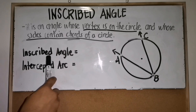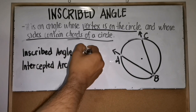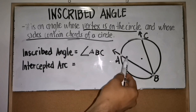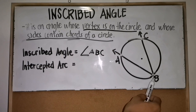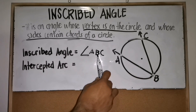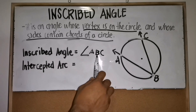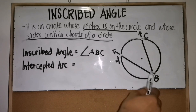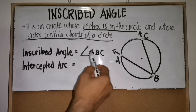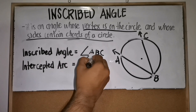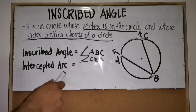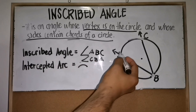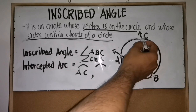The inscribed angle in this figure is angle ABC, where B is the vertex. We don't name it ACB because the vertex should be in the center of the angle's name, so it is angle ABC or angle CBA. For the intercepted arc, we can call it arc AC or arc CA.